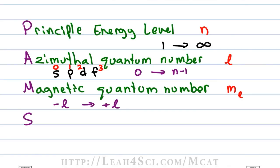Since S is 0, negative 0 to positive 0 is still 0 but P being 1, we have negative 1, 0 and positive 1, that's how we get our 3 sub orbitals for P or X, Y and Z. For D we have negative 2, negative 1, 0, positive 1 and positive 2 for a total of 5 sub orbitals and so on.